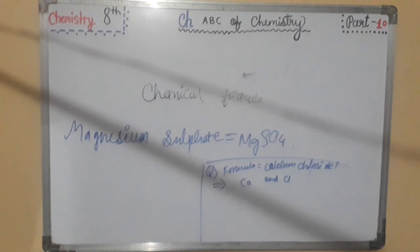Step three is, write the valences of combining units just above their symbols. And the valence of Ca is 2 and Cl is 1.